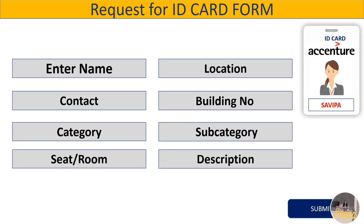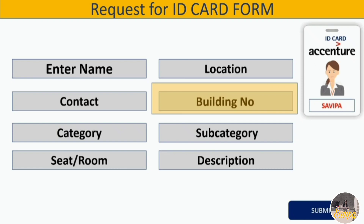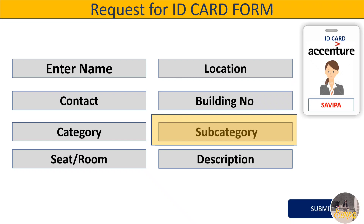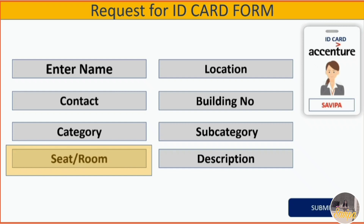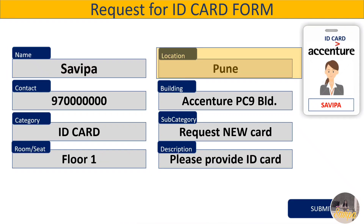After clicking the link, you will get a form. The fields are: first, your name; second, your office location; third, your contact number; fourth, your building number — you would have known your building number from your myTE. Next is category and subcategory, and your seat and room number. If you don't know the seat and room number, just put the floor number or leave it blank. For the description, write the purpose of your request.